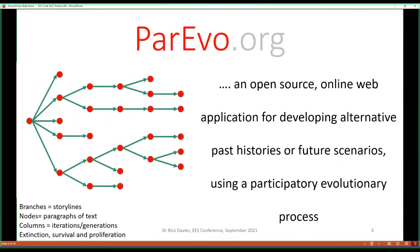ParEvo is an open-source online web application for developing alternative past histories or future scenarios using a participatory evolutionary process. It can be used to reconstruct the past as well as alternative futures. Each branch of a tree structure is a storyline, like a chapter in a book. The nodes in the diagram are paragraphs of text — one paragraph following the other, saying what happened, what happened next. The columns are iterations in the process of constructing these storylines.